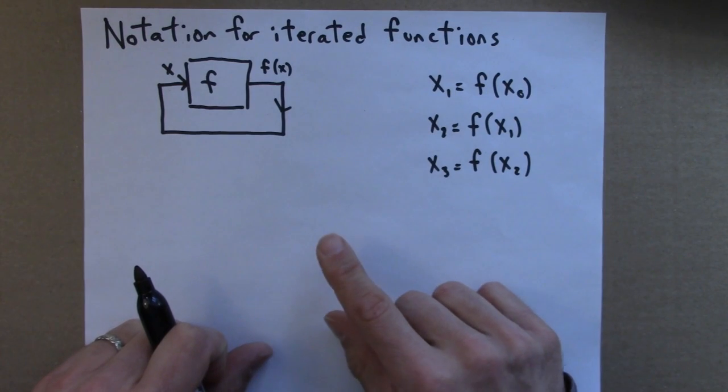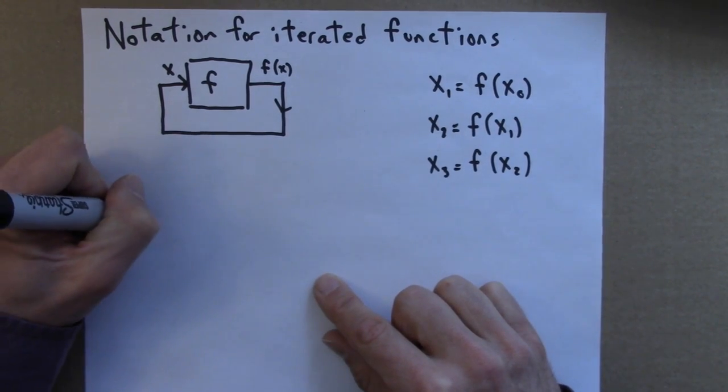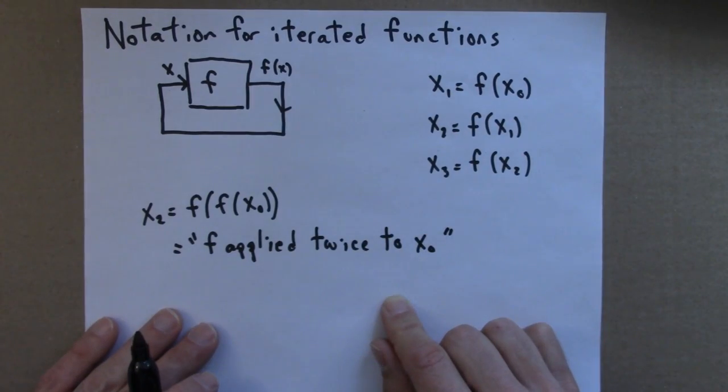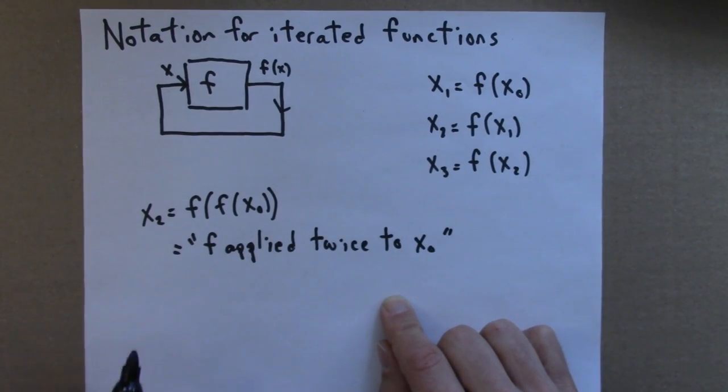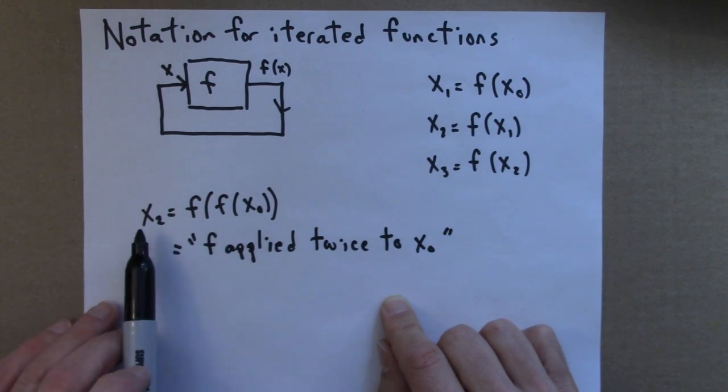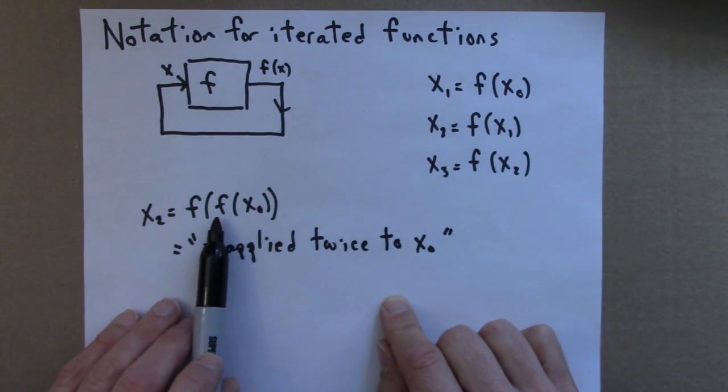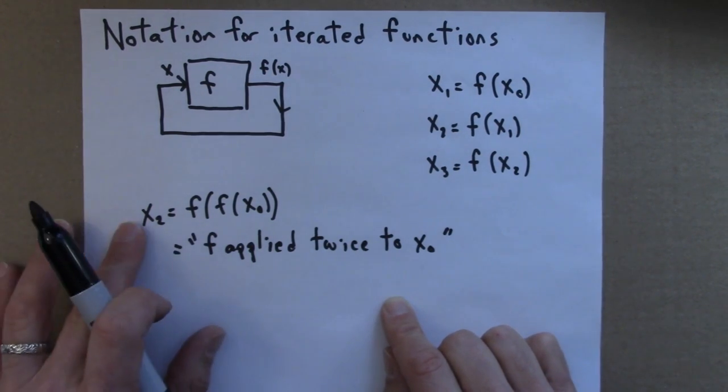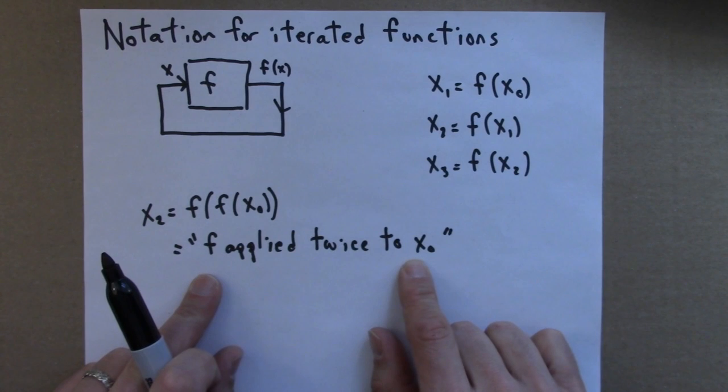We can write that in a formula as follows. So this notation means x2, to get x2, I start with my seed x0, apply f to it and apply f to it again. In other words, x2 is f applied twice to x0.